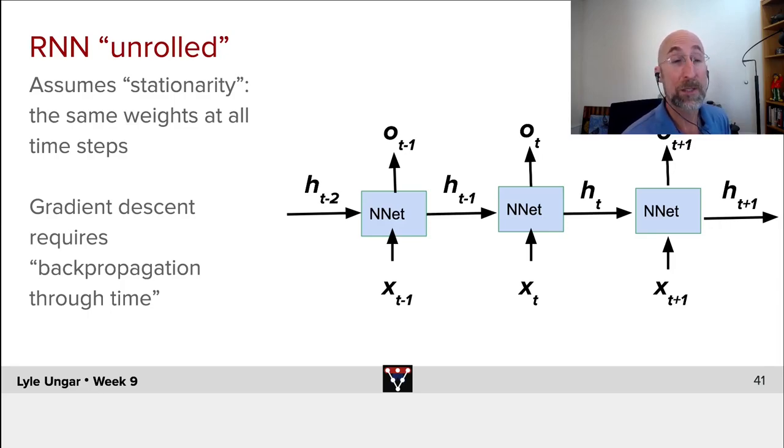So what happens? We take in the initial hidden state 0, plus the current observation x of t minus 1, pass it through a neural net, compute a new hidden state and output, keep repeating, exactly the same weights in each copy of the neural net.